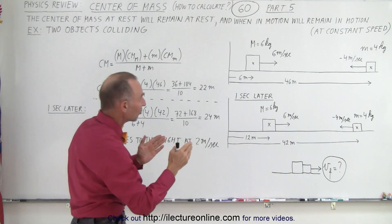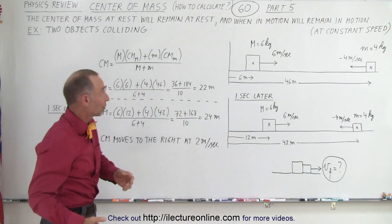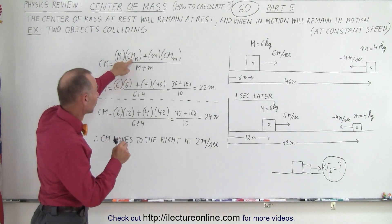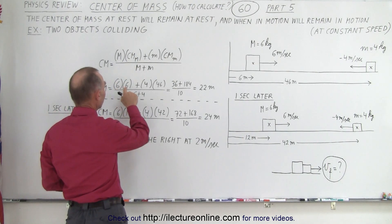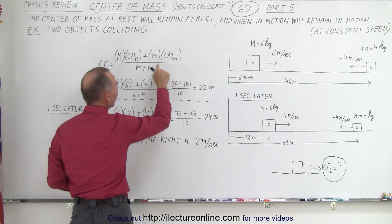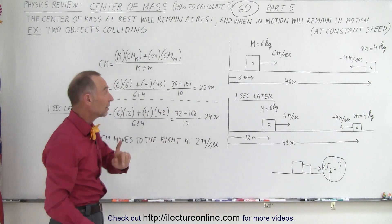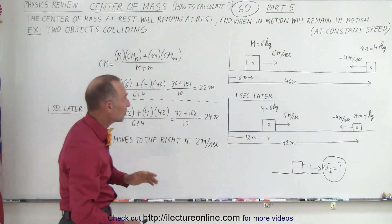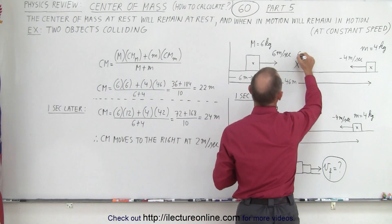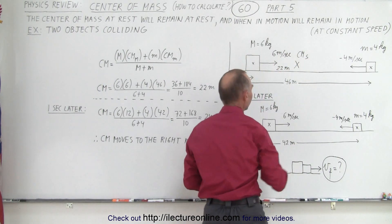If we calculate where the center of mass of the system is at this moment in time, we use the same principle: we multiply the mass of the first object by its position — 6 kg times 6 m — and do the same with the small mass, 4 kg times 46 m, then divide by the sum of the two masses. It turns out the center of mass is at 22 m away from the point of reference.